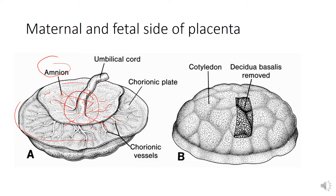The maternal surface of the placenta is dark red in color and is covered by a thin, shaggy layer of decidua basalis, which appears reddish-gray in color. This surface presents a number of convex, somewhat polygonal areas separated from each other by shallow grooves. These bulging areas, 15 to 30 in number, represent the cotyledons of the placenta.